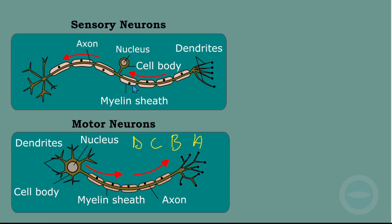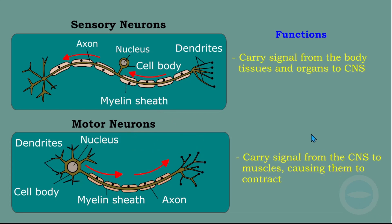Now we have to explain the functions of the sensory neuron and the motor neuron. The sensory neuron carries signals from the body tissues and organs to the central nervous system. The motor neuron carries signals from the central nervous system to the muscles. After the brain has responded to information from the sensory neuron, this information travels through the motor neuron to the target, causing the muscles to contract. Make sure you know how to label this structure.